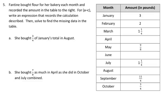Part A says she bought 3/4 of January's total in August. Let's look at January. She bought 3 pounds, so I need to find 3/4 of that, which is 3/4 times 3, which equals 3 times 3 over 4, which equals 9/4, which equals 2 and 1/4. So in August, I'm going to write my answer as 2 and 1/4.